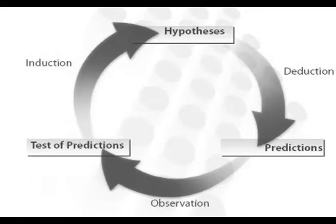Four essential elements of a scientific method are iterations, recursions, interleavings or orderings of the following: Characterizations include observations, definitions and measurements of the subject of inquiry. Hypothesis refers to theoretical, hypothetical explanations of observations and measurements of the subject. Predictions include reasoning—that is, logical deduction—from the hypothesis or theory. Experiments mean tests of all the above. Each element of a scientific method is subject to peer review for possible mistakes.